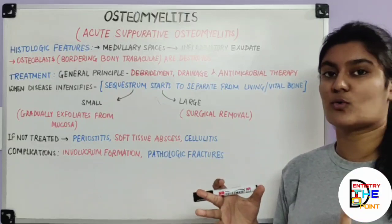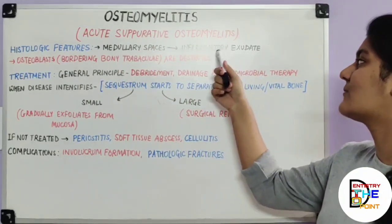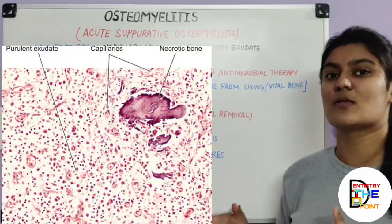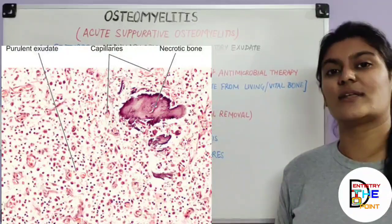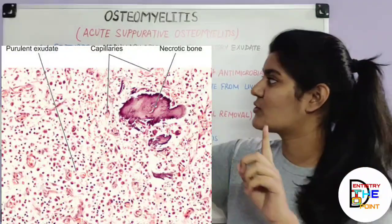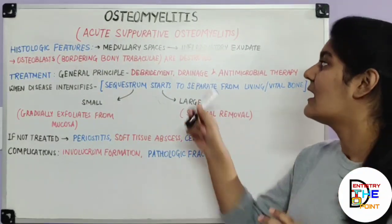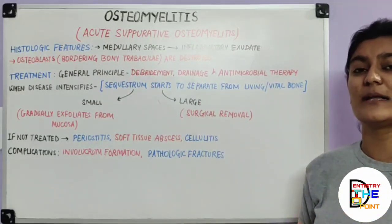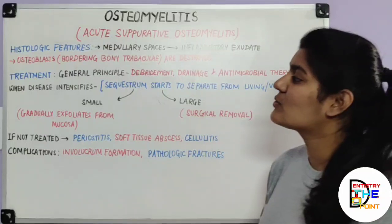Regarding histological features: since acute suppurative osteomyelitis spreads through medullary spaces, the medullary spaces are filled with inflammatory exudate. The chief inflammatory cells are polymorphonuclear leukocytes (PMNs), with occasional lymphocytes and plasma cells. Osteoblasts bordering the bony trabeculae may be destroyed, and in severe cases the trabeculae may lose their viability and show severe resorption of bone.